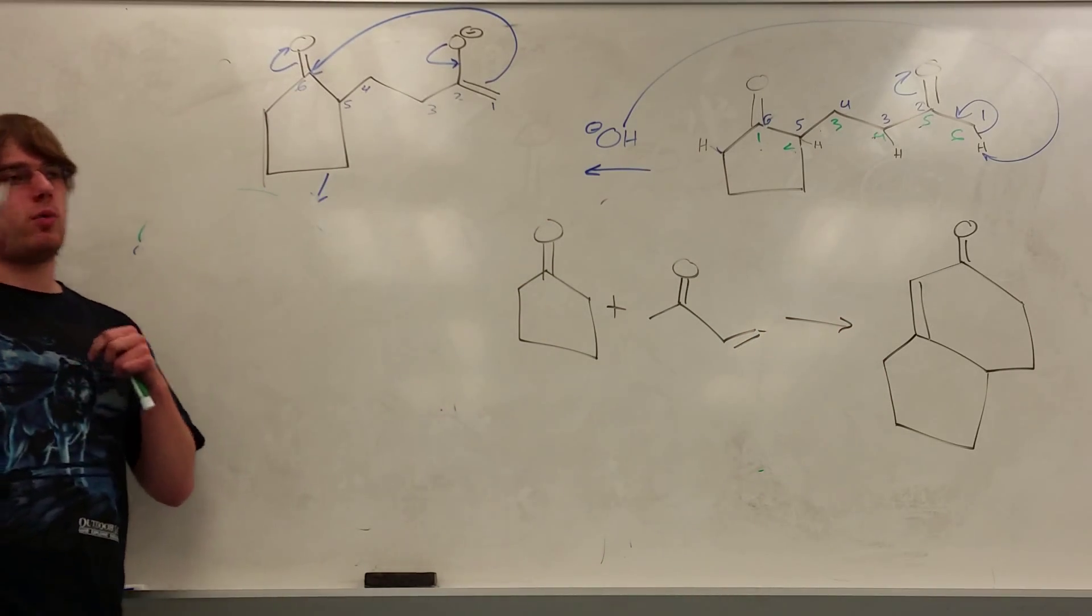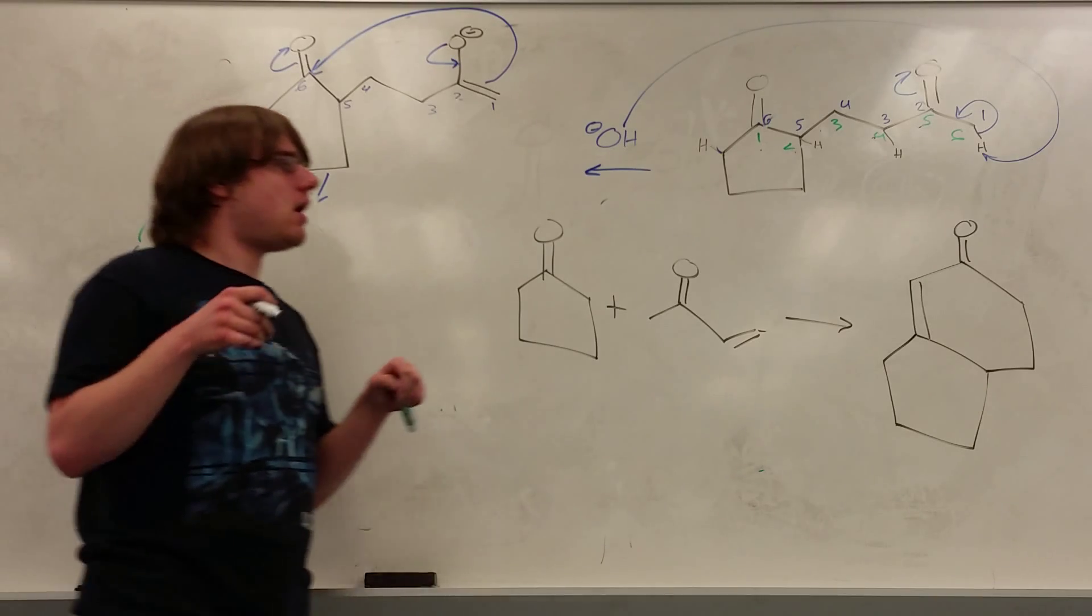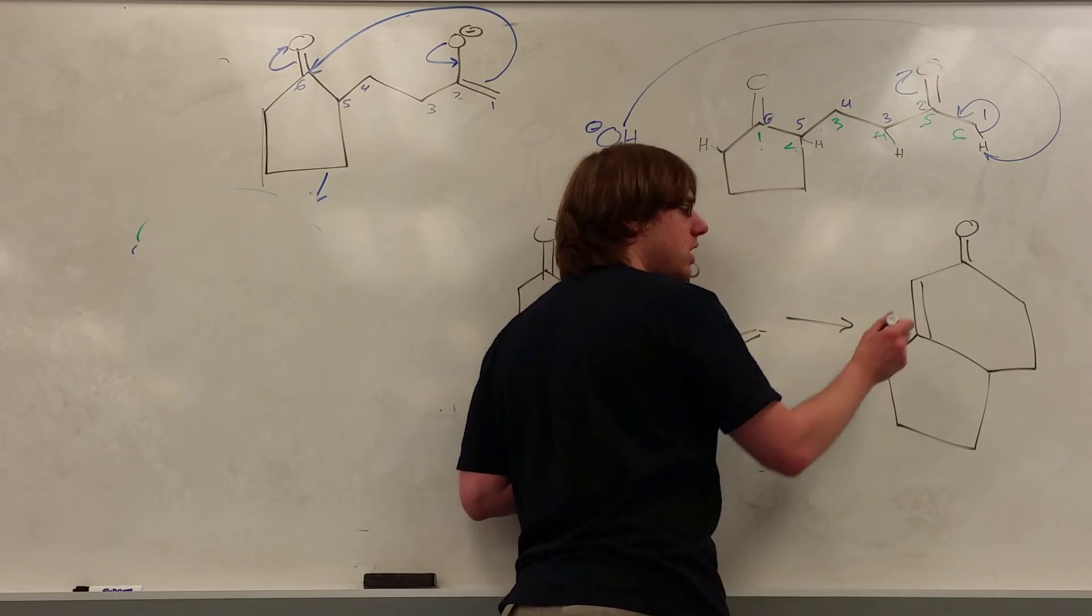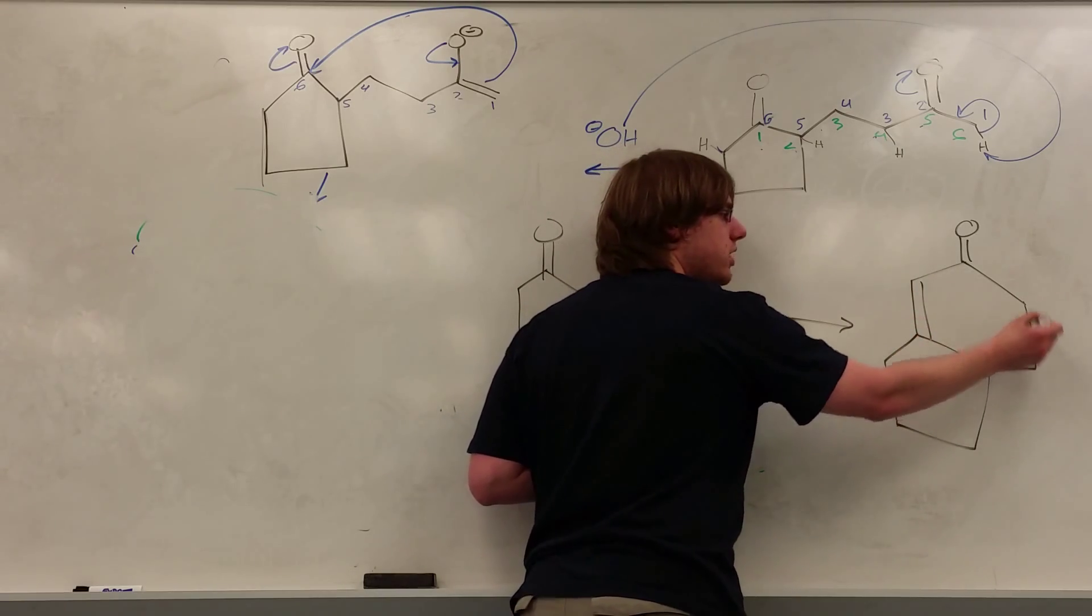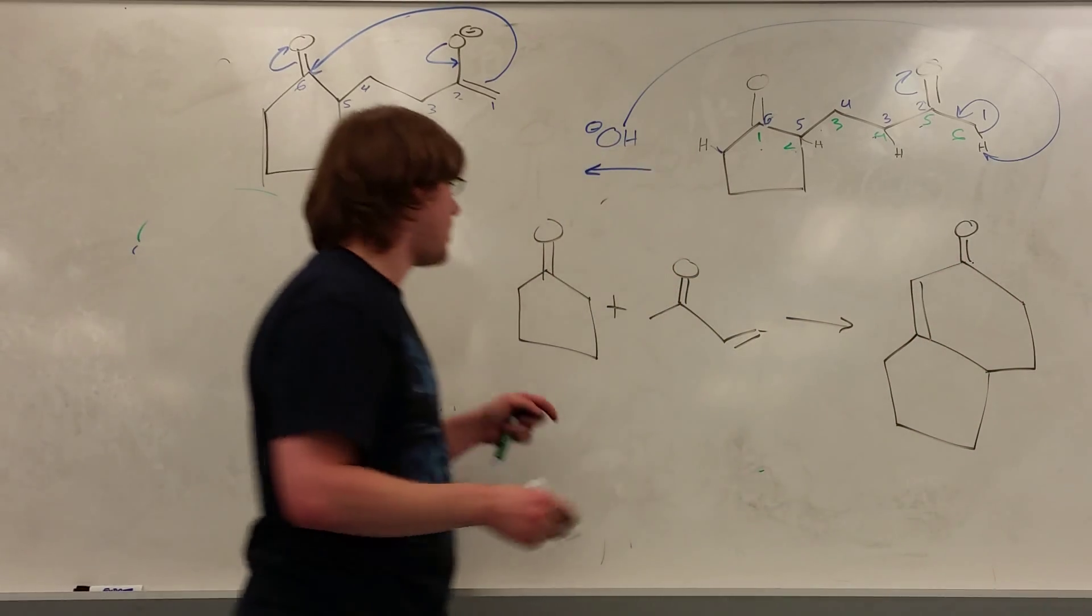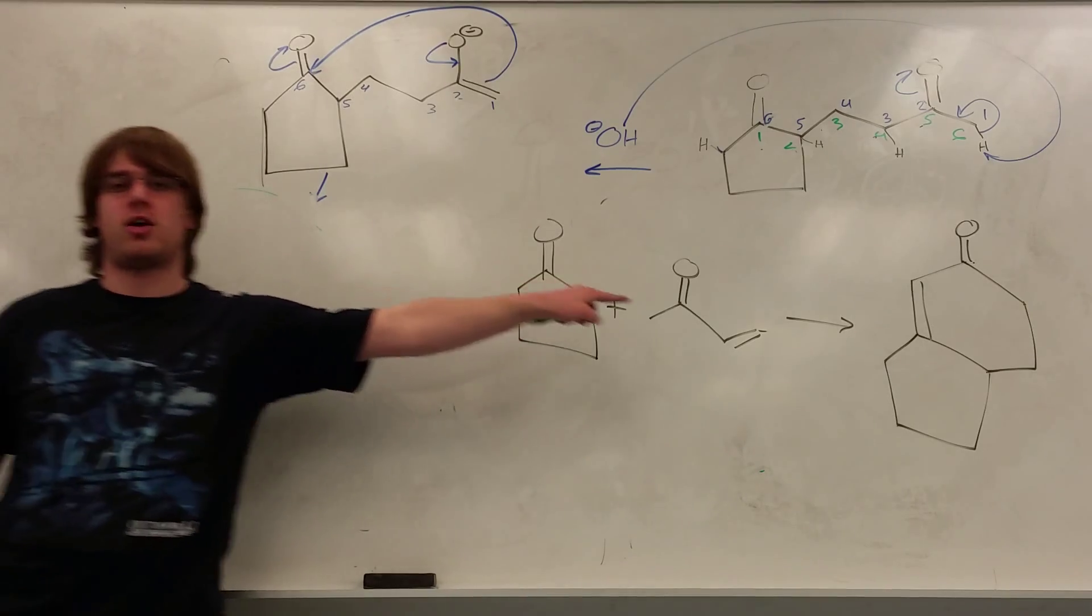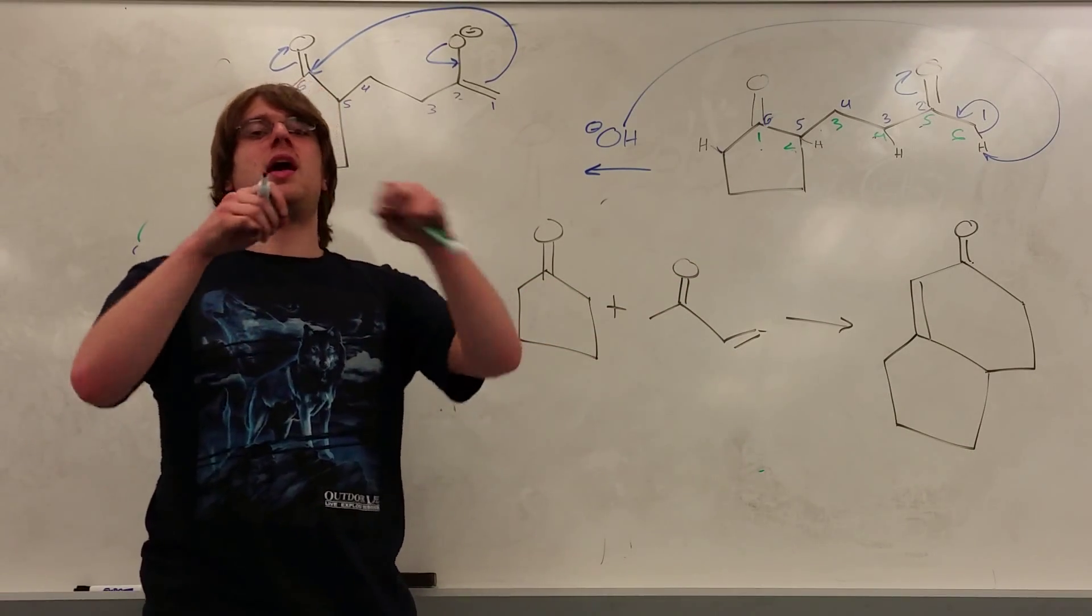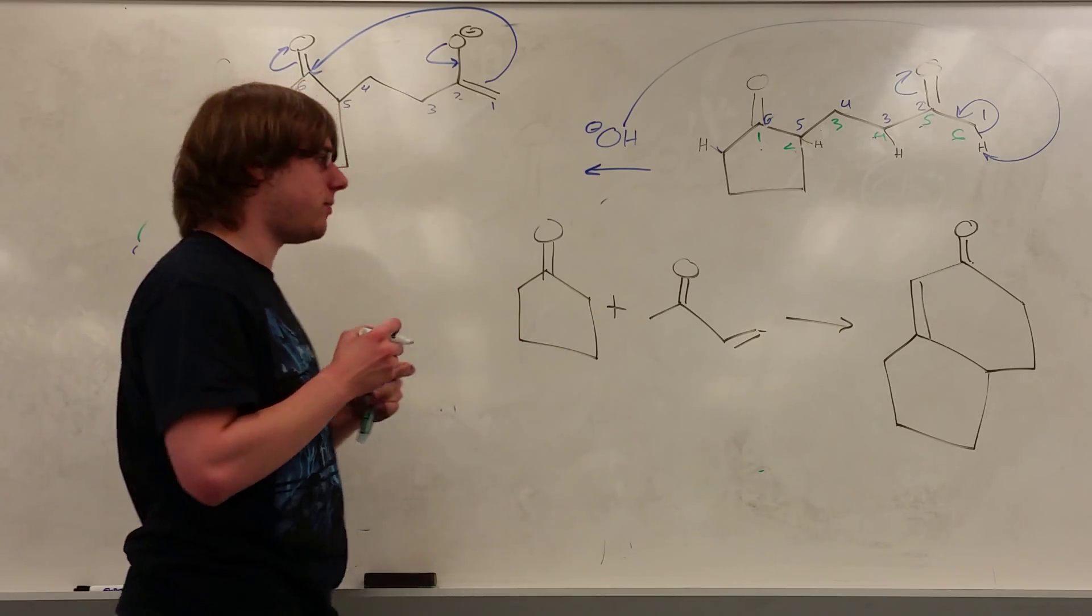Now there's one really important point I want you to take away from this, and that's the fact that this reaction ends with 6-membered rings. If you look at this, I have a 1, 2, 3, 4, 5, 6-membered ring. That wasn't there originally. I had a 5 and then a carbon chain. But Robinson annulations will always have a final product that has at least one 6-membered ring in it.